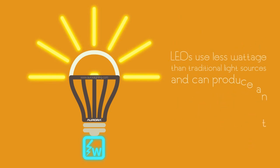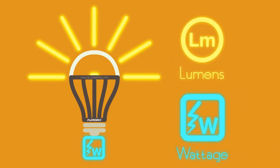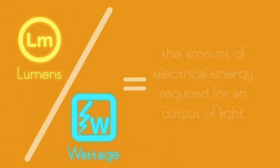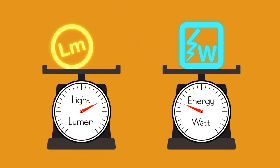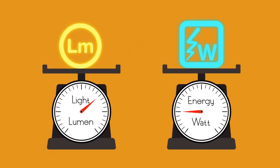When we evaluate LEDs, we have to consider both lumens and wattage. Lumens per watt is an expression of the amount of electrical energy required for an output of light. We measure energy in watts and we measure light output in lumens.